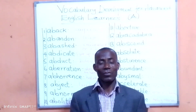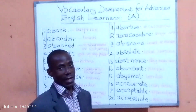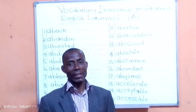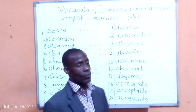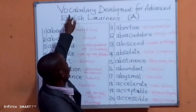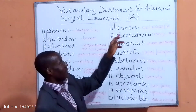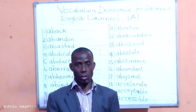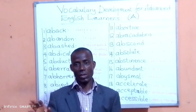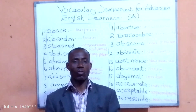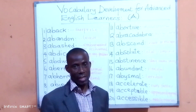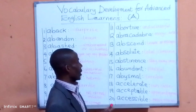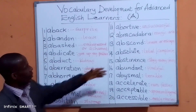Today we are taking the first session of our lessons for advanced learners — those who have gone through a little bit of English learning and want to move to an advanced level. Particularly, we are going to focus on vocabulary development. Through this series, we are taking 20 words from A, 20 words from B, 20 words from C, and so on. When we finish, we come back to A and continue from where we left off. Today we are going to start with the first 20 words from A.